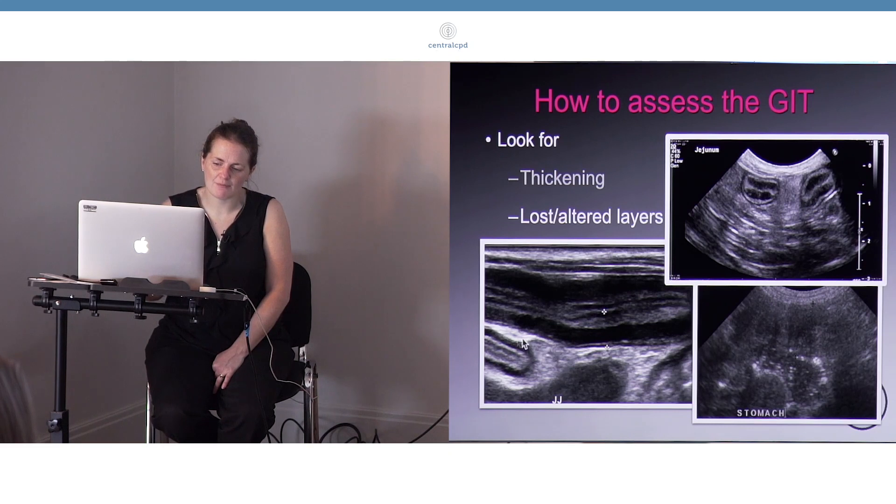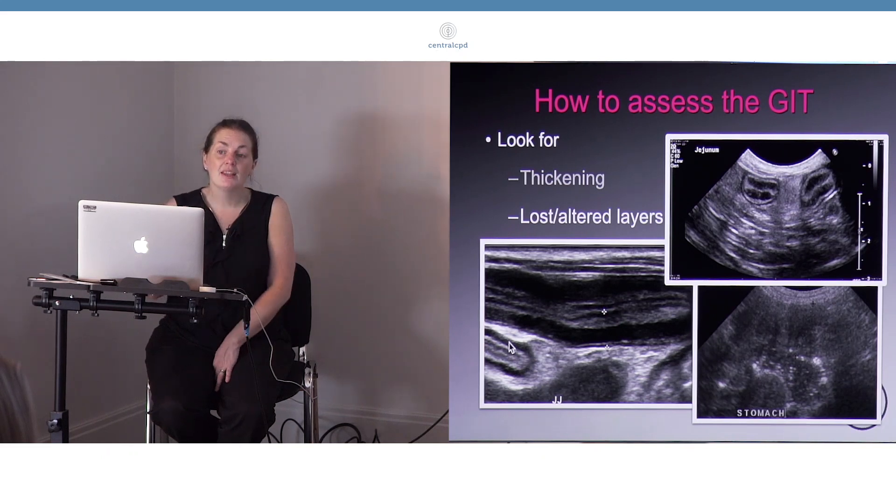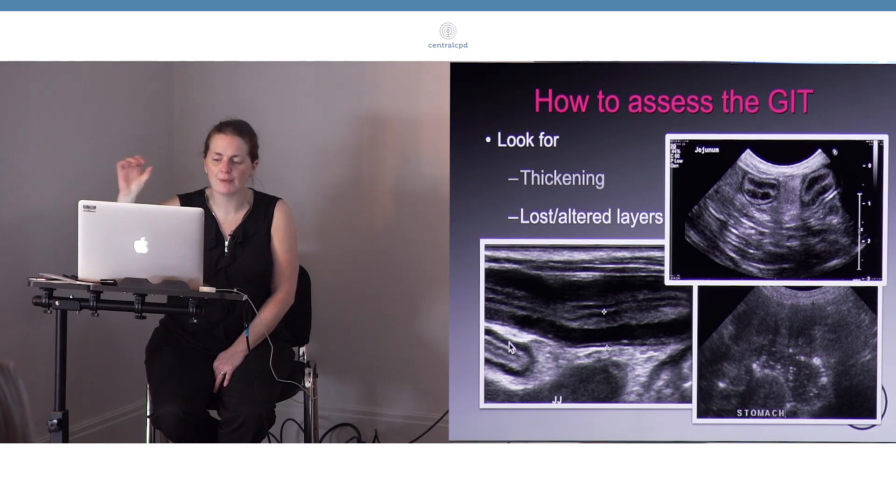We see that even better when we see it in cross-section. We'd normally expect to see this layer being thicker than this layer, and there are actually now published values of the proportions of the bowel wall that we would expect. Actually, it's a subjective thing. I think in the small intestine, if the mucosal layer is thinner than the muscularis layer, that would be abnormal.